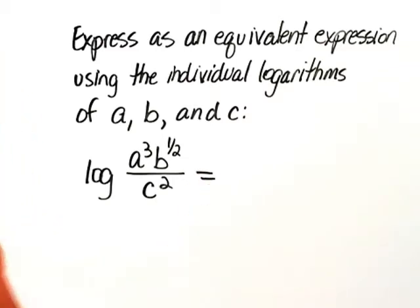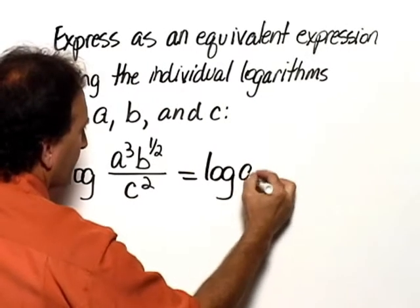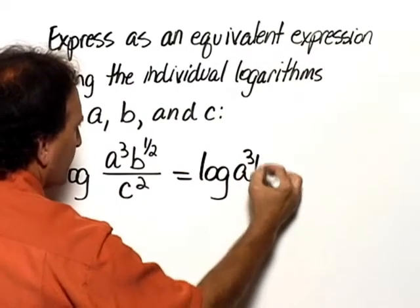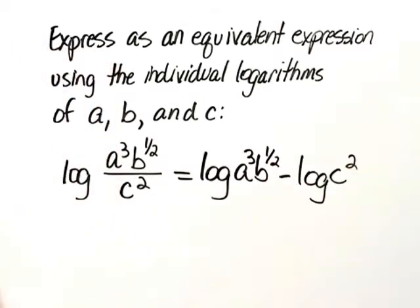Let's begin by using the rule for the log of a quotient, which is that you take the log of the numerator minus the log of the denominator. So this is the log of A cubed B to the 1 half minus the log of C squared.